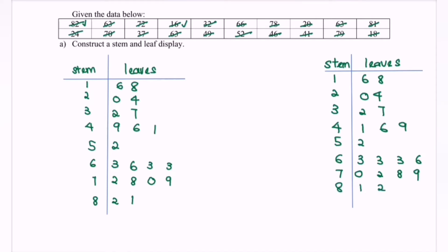Include a key, or legend, to explain the meaning of the entries. Key: 8|1 means 81. So here we have the steps to construct a stem-and-leaf display, or stem plot.